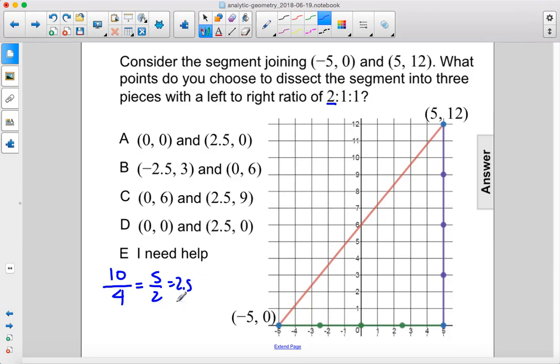The first segment will have 2 of those. So 2 times 2.5 is 5. So our first one will be here. So we'll go up and that will be our first segment.